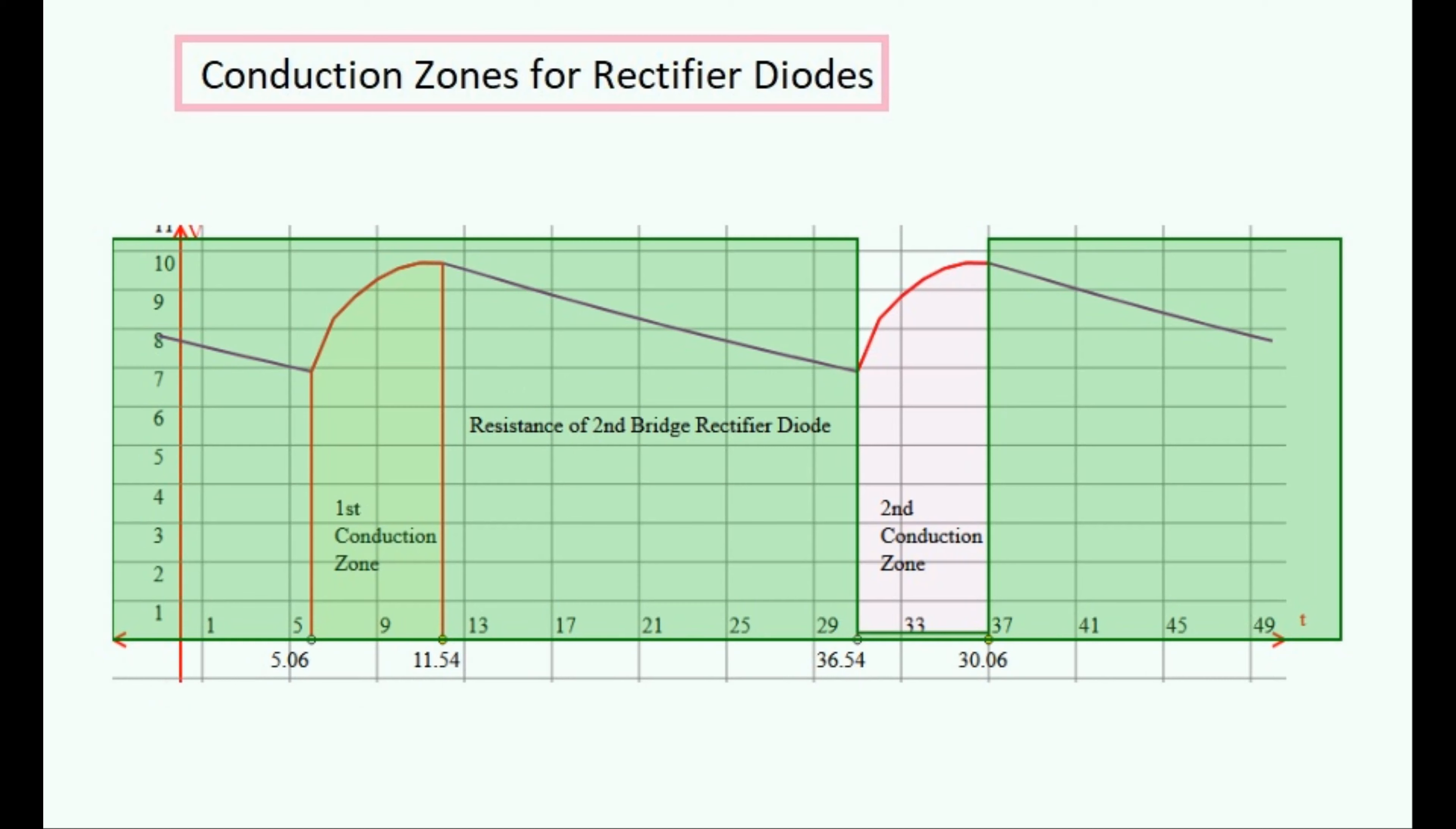So this is what the second type of diode's time dependent resistance looks like, which is like the first diode's but time shifted by about half a cycle.